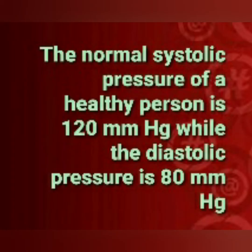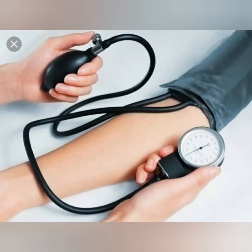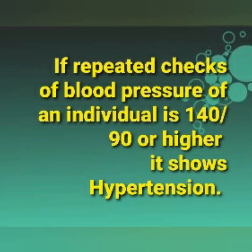The normal systolic pressure of a healthy person is 120 mmHg while the diastolic pressure is 80 mmHg. If repeated checks of blood pressure of an individual show 140/90 or higher, it indicates hypertension.